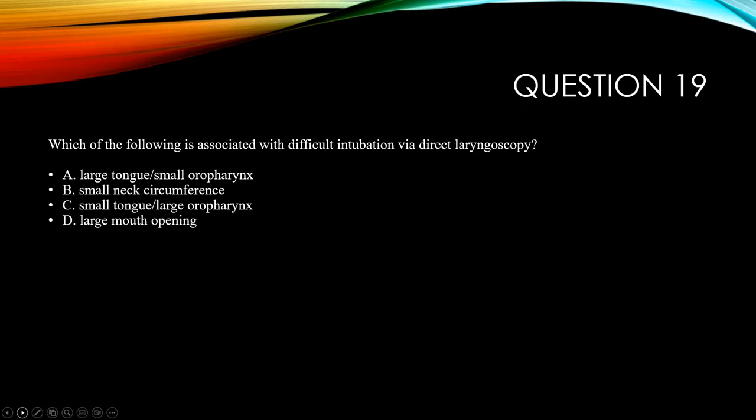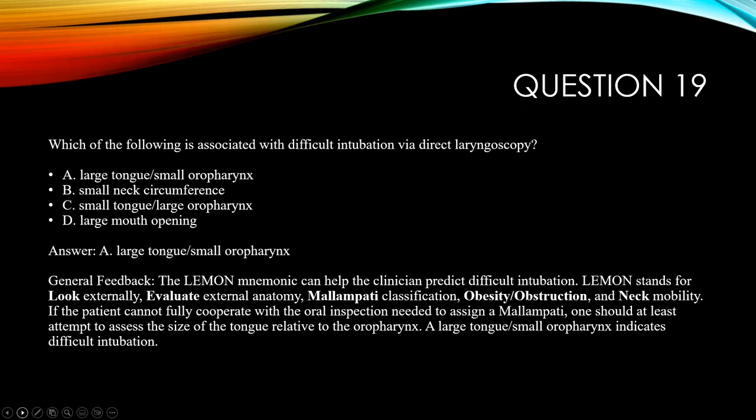Question nineteen: which features are associated with difficult intubation by direct laryngoscopy? The answer is large tongue and small oral pharynx/small mouth opening. Large oral pharynx and large mouth opening make intubation easier. The LEMON mnemonic helps predict difficult intubation: Look externally, Evaluate external anatomy, Mallampati classification, Obesity/Obstruction, and Neck mobility. When possible with elective intubation, assess the patient in advance using these criteria.